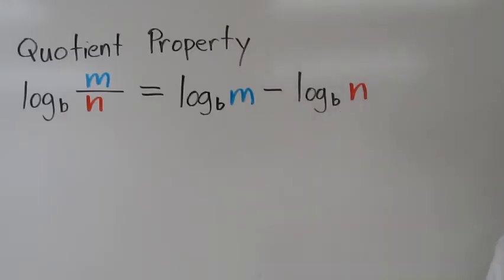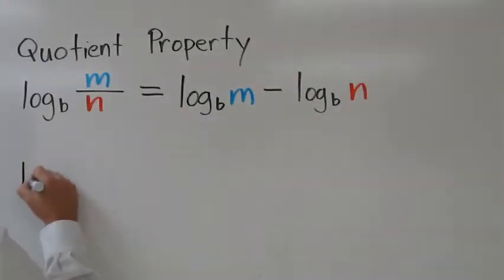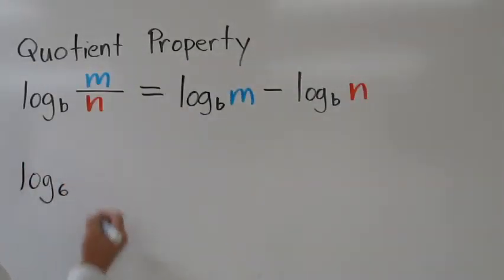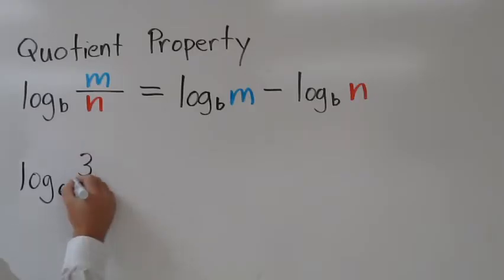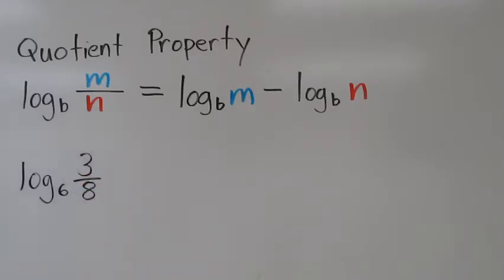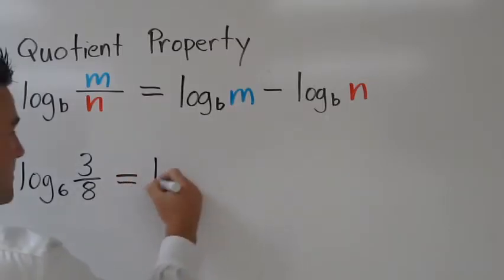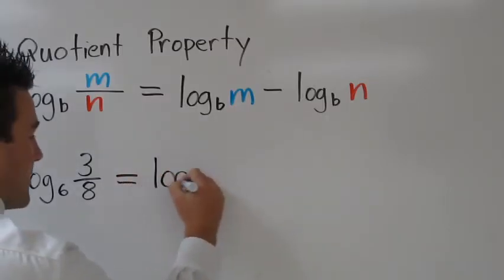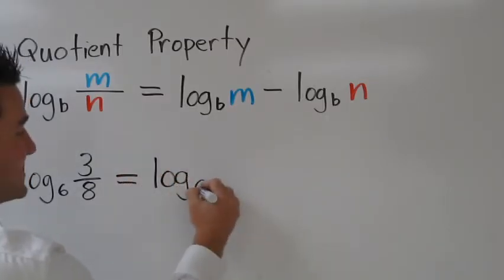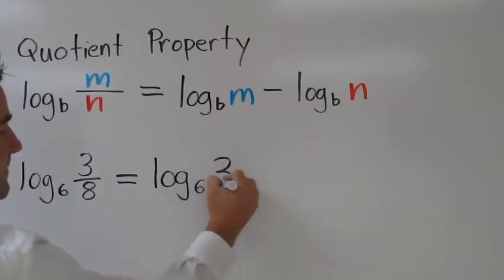Let's see an example of this. If we have log base 6 of 3 eighths, our m is 3 and our n is 8. So we can rewrite this as log base 6 of 3 minus log base 6 of 8.